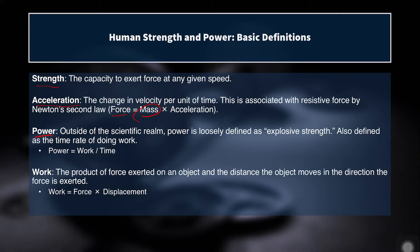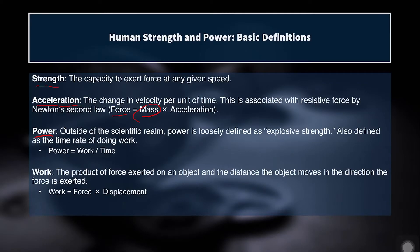Power, outside of the scientific realm, is loosely defined as explosive strength. In athletics, we would call somebody powerful if they can move a load very quickly or if they can move their own body very quickly — they're explosive, with great jump height or able to knock someone down. But power can also be defined as the rate of doing work, so power equals work divided by time.